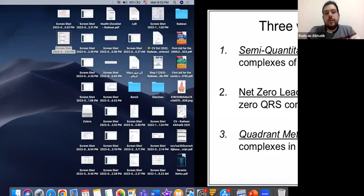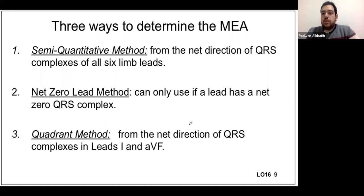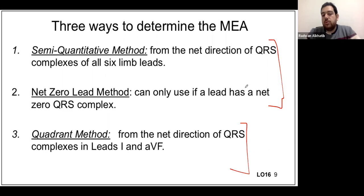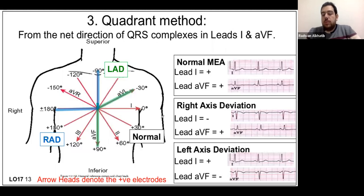There are three ways to determine the mean electrical axis of the heart. The first two are pure physiological methods that are low yield practically. The third method is the one actually used at the bedside — it's very quick. We'll start with the third method, then touch on the first two for exam purposes.